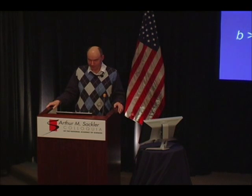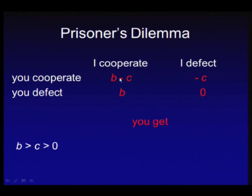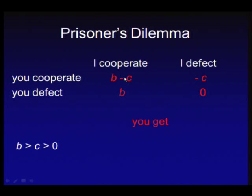Here's the game-theoretic analysis. You don't know what I will do. If I cooperate, you have a choice between B minus C and B — B is greater than B minus C, so if I cooperate, it's better for you to defect. If I defect, you have a choice between 0 and minus C — 0 is greater than minus C, so if I defect, it's better for you to defect. No matter what I do, it's better for you to defect. We both end up defecting with a low payoff, even though over there we could have had B minus C, which is greater than 0. This is what game theorists call rationality.